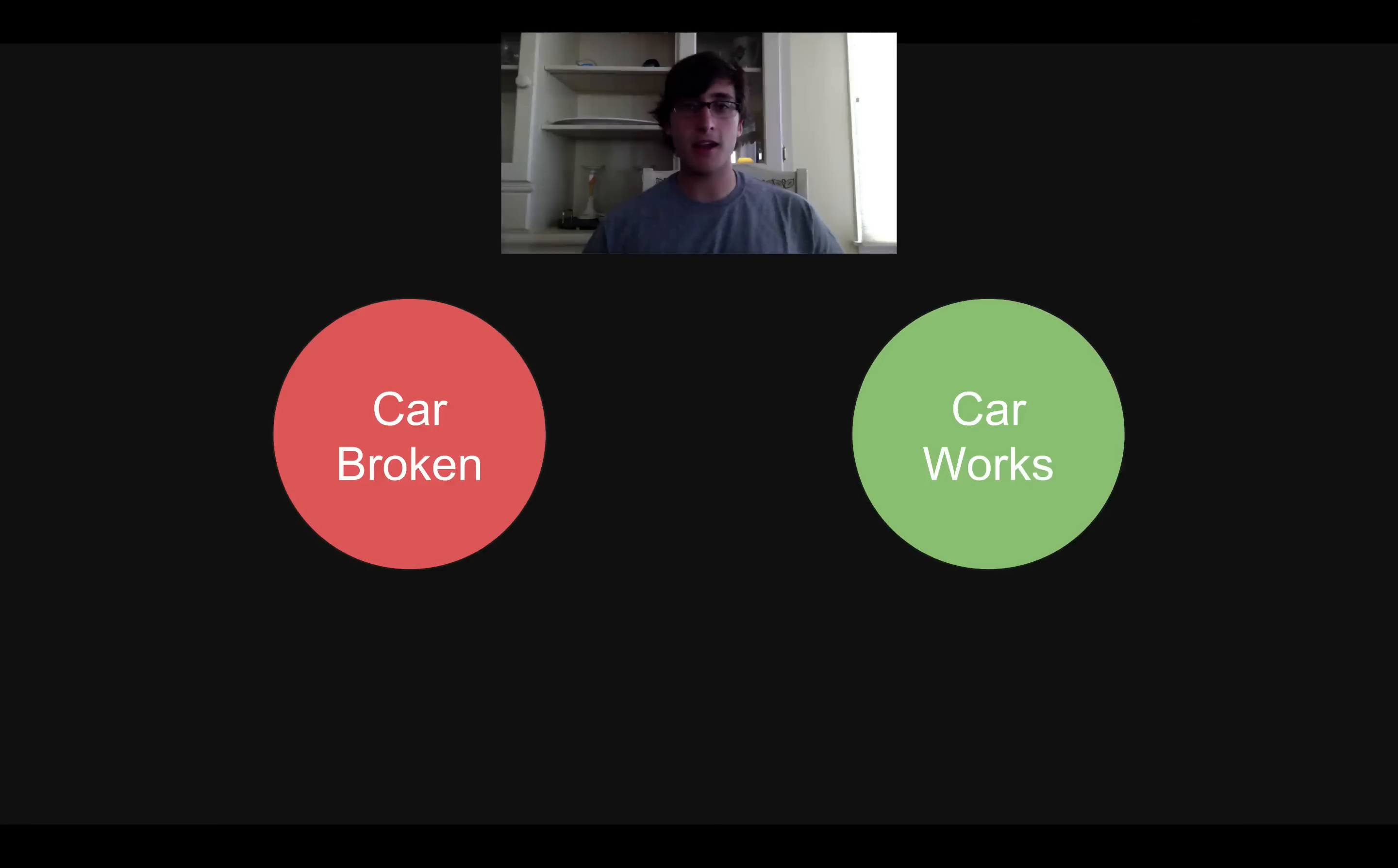So I want to start off by talking about a really simple example in real life where a Markov chain might arise. Imagine the only thing I care about is whether or not my car works. So there's just two states the world can be in. Either my car is functional, I can use it to drive to work, or my car is broken, it's useless sitting in my driveway and I just cannot get anywhere with my car.